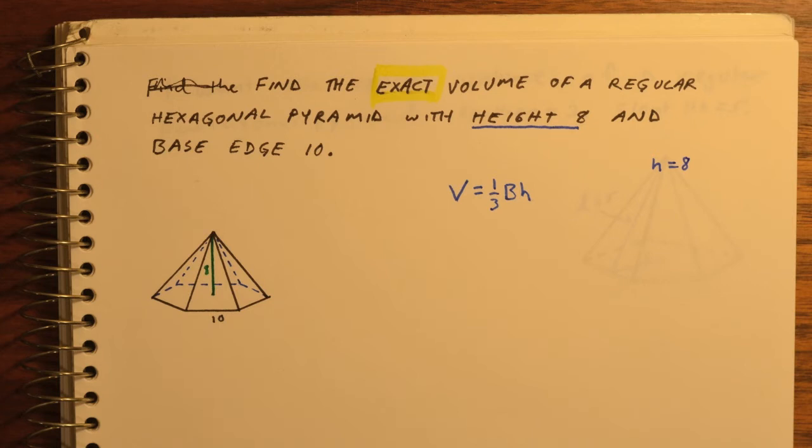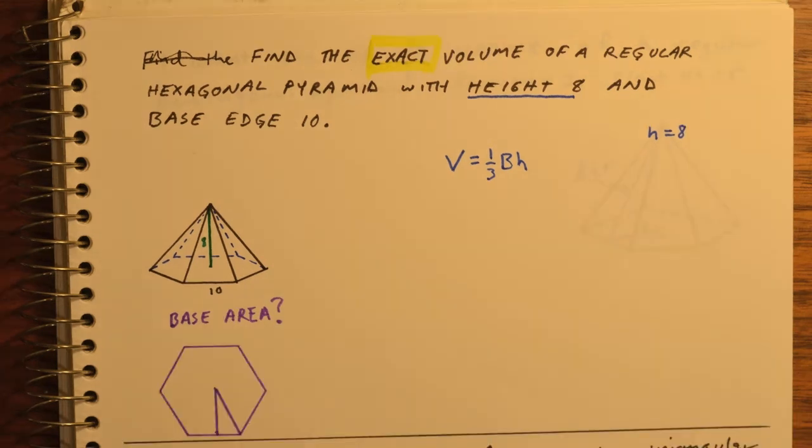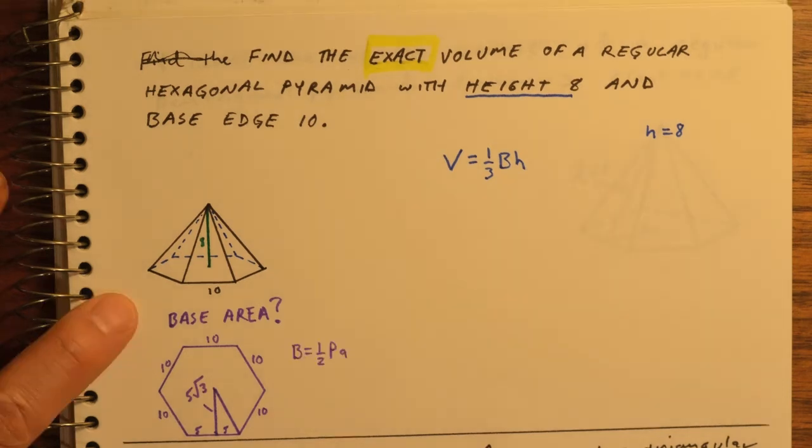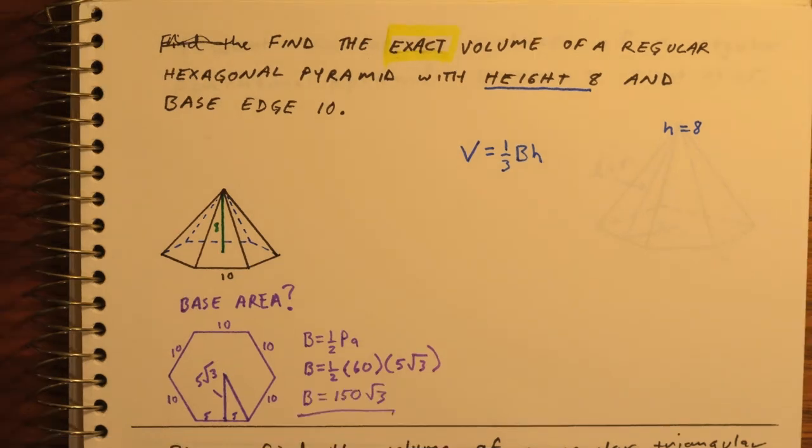We're given one base edge. Since all base edges are 10, if I split up one base edge, I get 5. Remember with hexagons, that little half triangle is a 30-60-90. So the apothem here is 5 root 3, and the base area is 150 root 3.